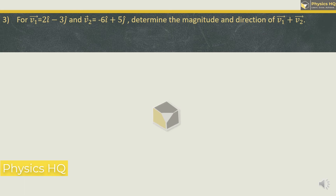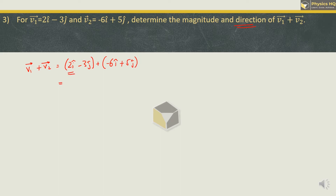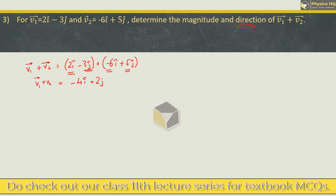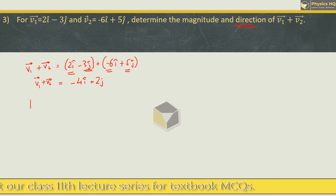Let us go to the next sum. For vector v1 = 2i - 3j and v2 = -6i + 5j, determine the magnitude and direction of v1 + v2. First, let us find v1 + v2: (2i - 3j) + (-6i + 5j). Now 2i - 6i gives -4i, and -3 + 5 gives +2j. So v1 + v2 = -4i + 2j.